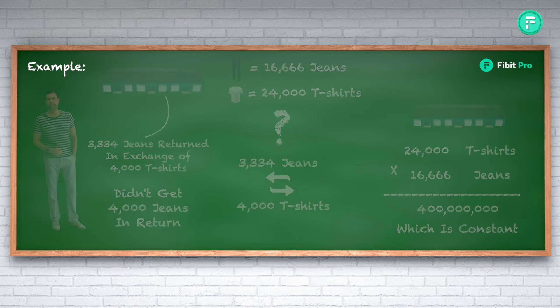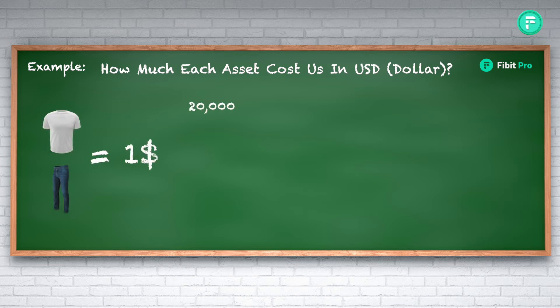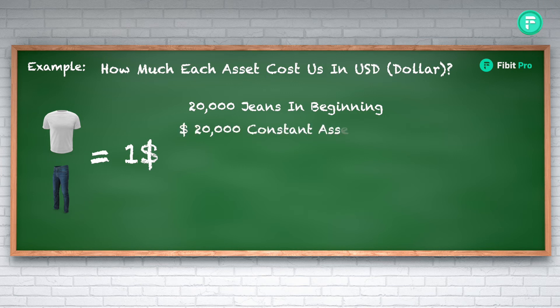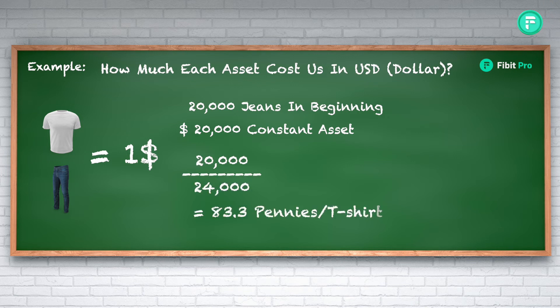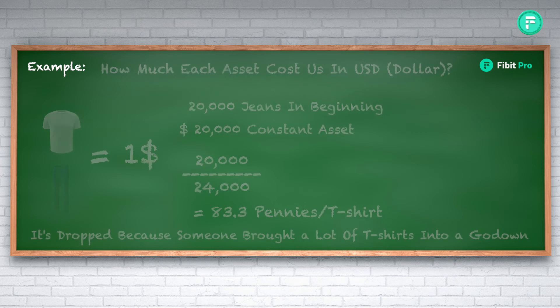We also need to know how much each asset costs in USD. The businessman initially priced both at one dollar with 20,000 of each, keeping that as the constant baseline. So 20,000 divided by 24,000 t-shirts brings the price of a t-shirt to 83.3 cents. It has dropped because someone brought a lot of t-shirts into the godown.